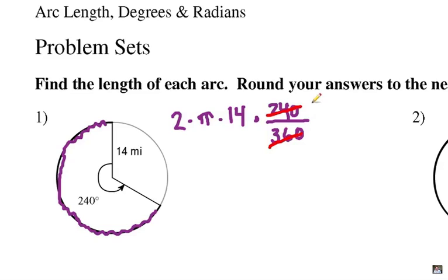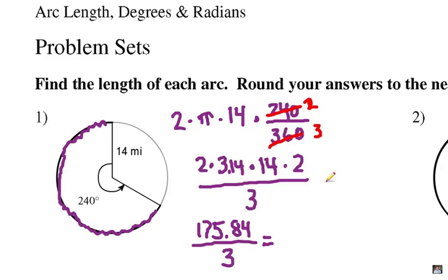Alright, let's simplify. Common factor of 120 right there, so that's going to give me 2 over 3, and multiply this whole thing out, which is eventually going to give me 175.84 divided by 3, and now it's going to give me 58.613. Let's call it 58.6. Okay, now that's going to be miles, and that's going to be my unit there.